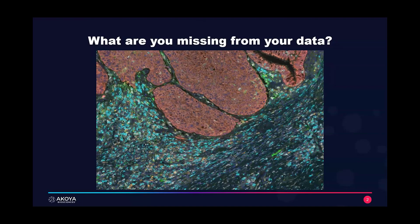But are we missing something here? Imagine you could reveal a whole new layer of information from your immunofluorescence experiments that not only lets you study which cell types are present in the tissue, but also where these cells are in relation to each other and how likely they are to interact with each other. We want to see a whole new layer of information.